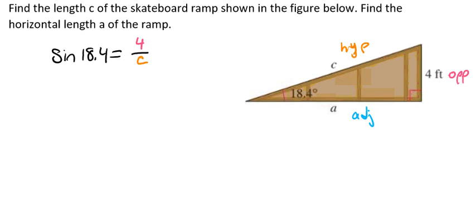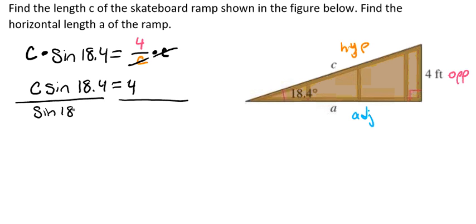So what we can do here is we can go ahead and multiply both sides by C, and that's going to allow us to cross those off. So now we have C times the sine of 18.4 equals 4, and we'll go ahead and divide both sides by the sine of 18.4, which is going to give us C equals 4 divided by the sine of 18.4.